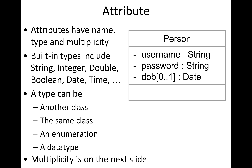Attributes that describe a class will typically be all lowercase or camelCase if more than one word. Here we have a person class described by three attributes: username, password, and date of birth — all of which are private and not accessible from outside. The first two are strings. You can use many different data types such as strings, integers, doubles, booleans, and dates. They don't necessarily have to map to a Java data type or a database schema data type — this is all conceptual.